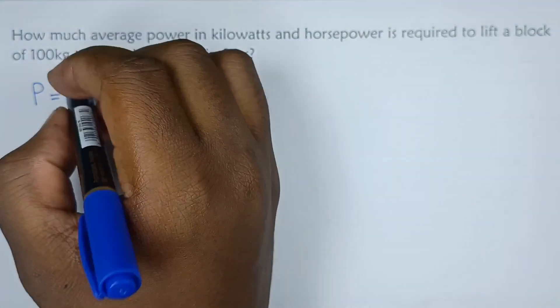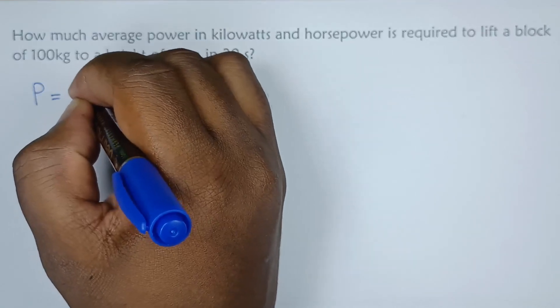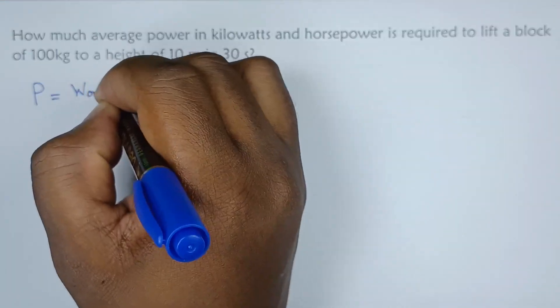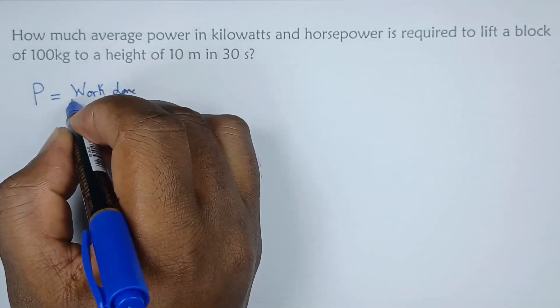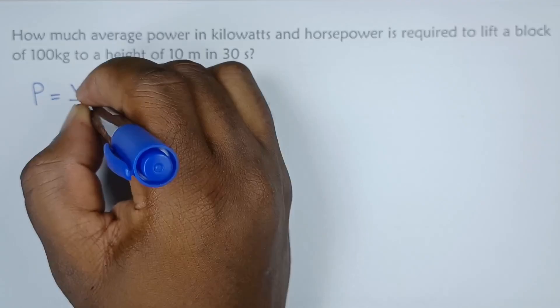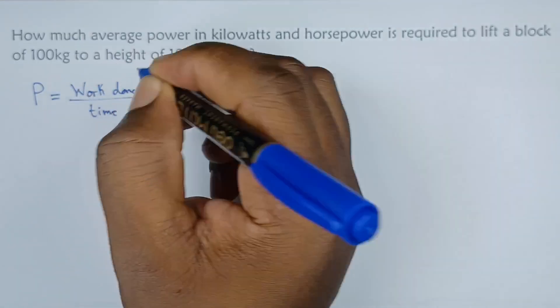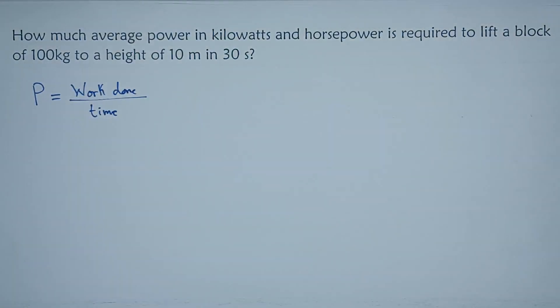power equals work done over time. And by definition, power is simply the rate at which work is done, that is work done over time.